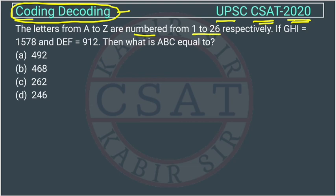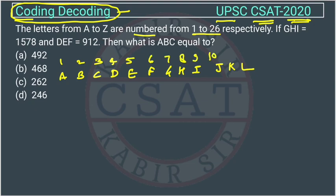The alphabet goes A, B, C, D, E, F, G, H, I, J, K, L and so on. These are numbered 1, 2, 3, 4, 5, 6, 7, 8, 9, 10.